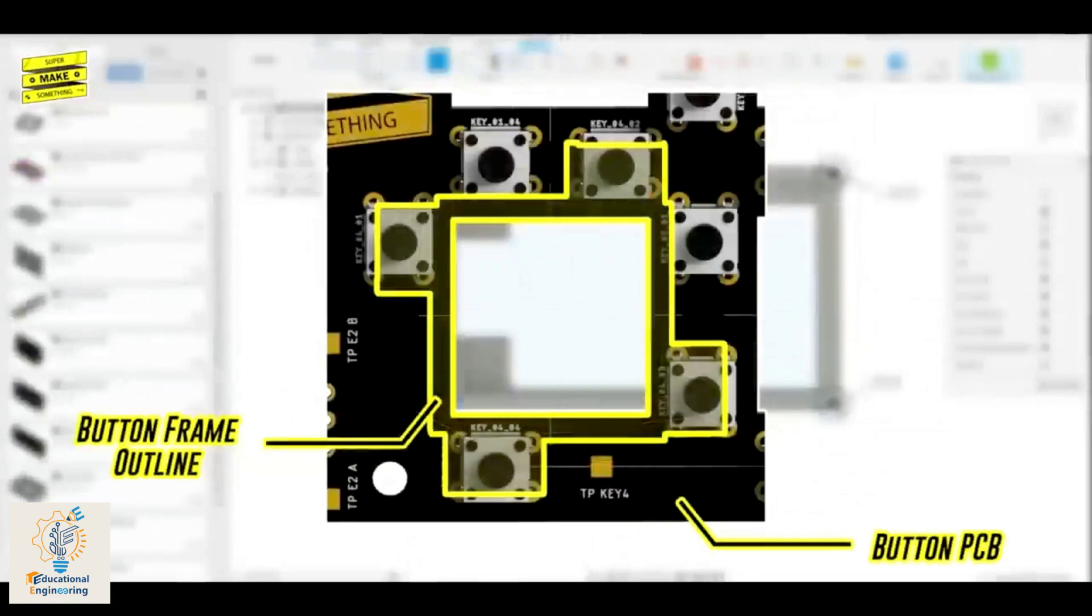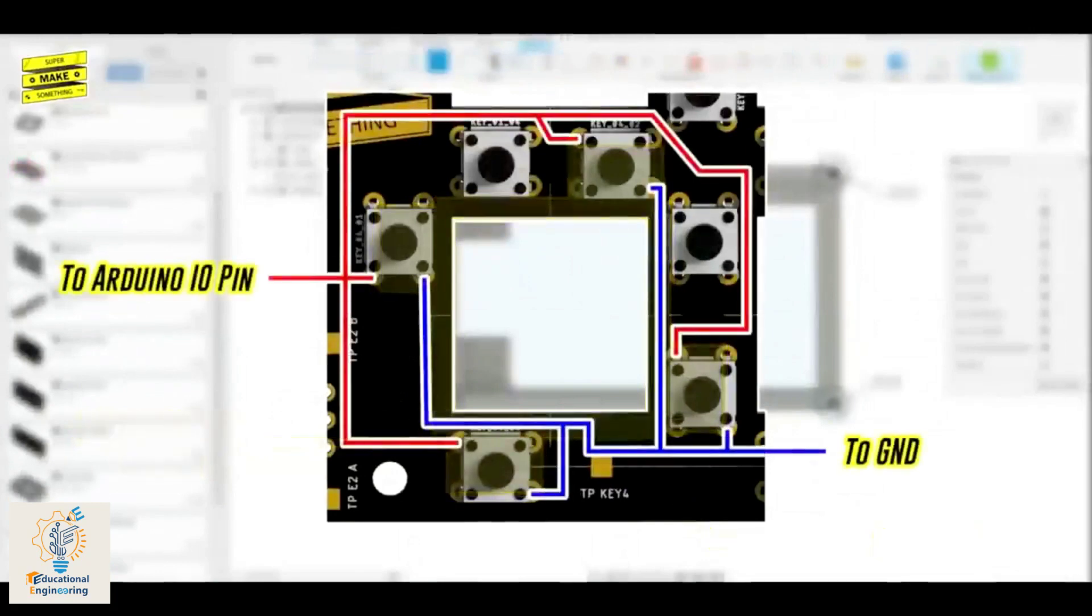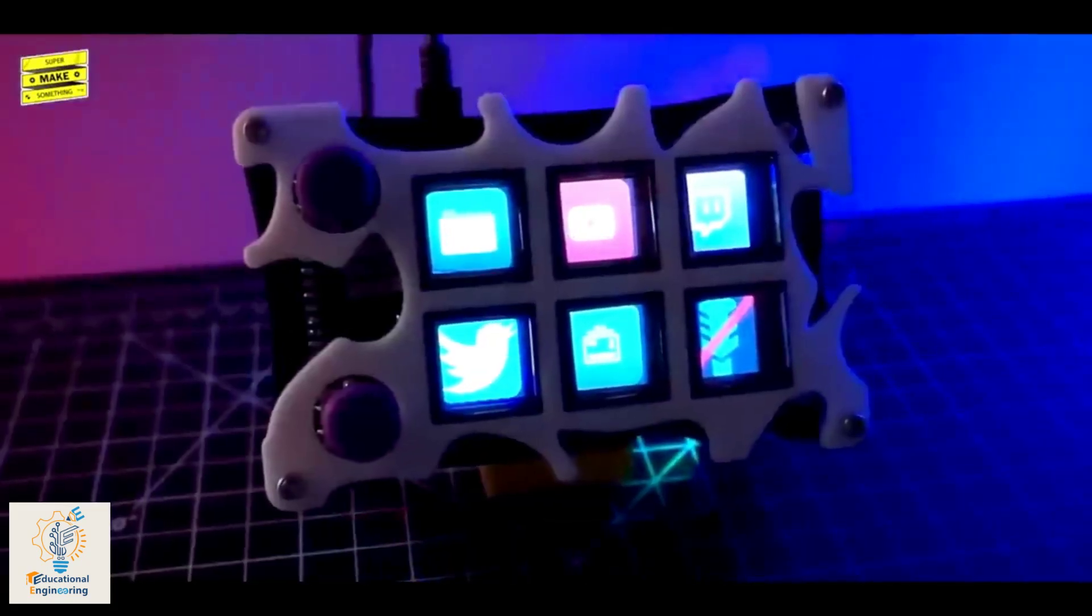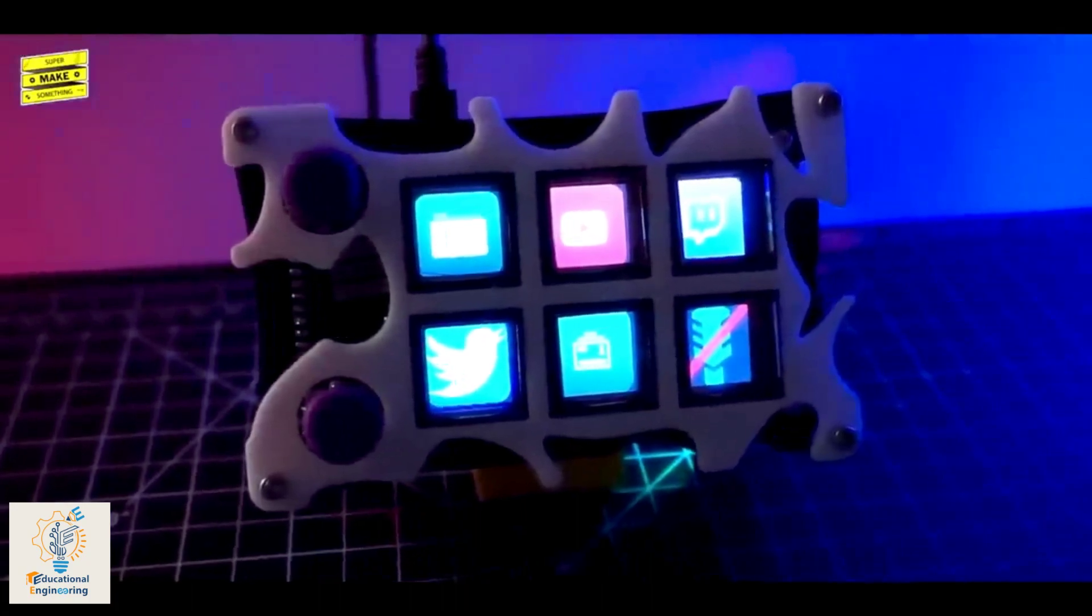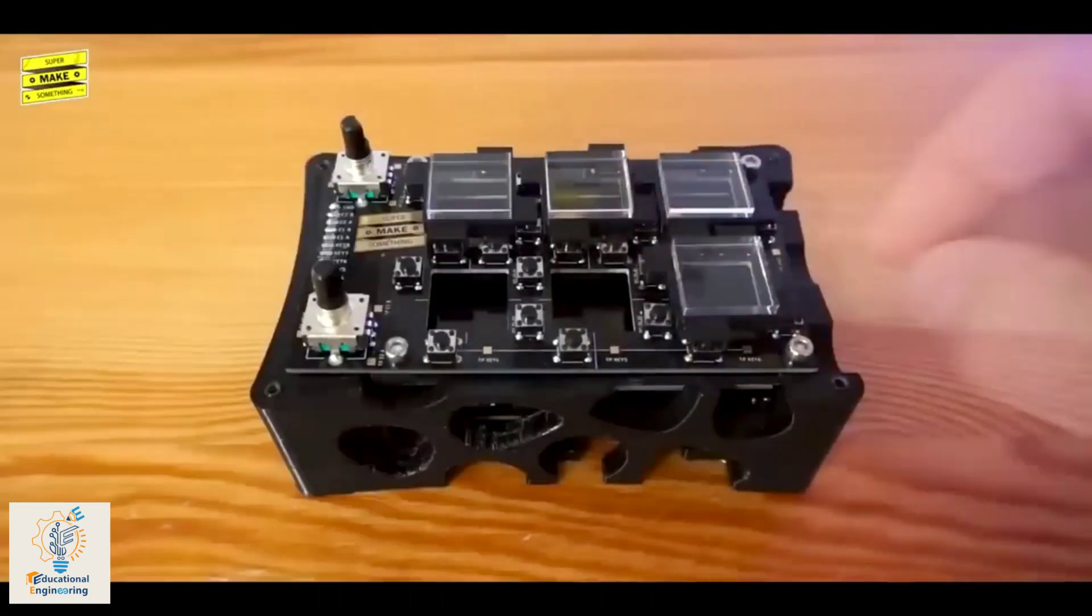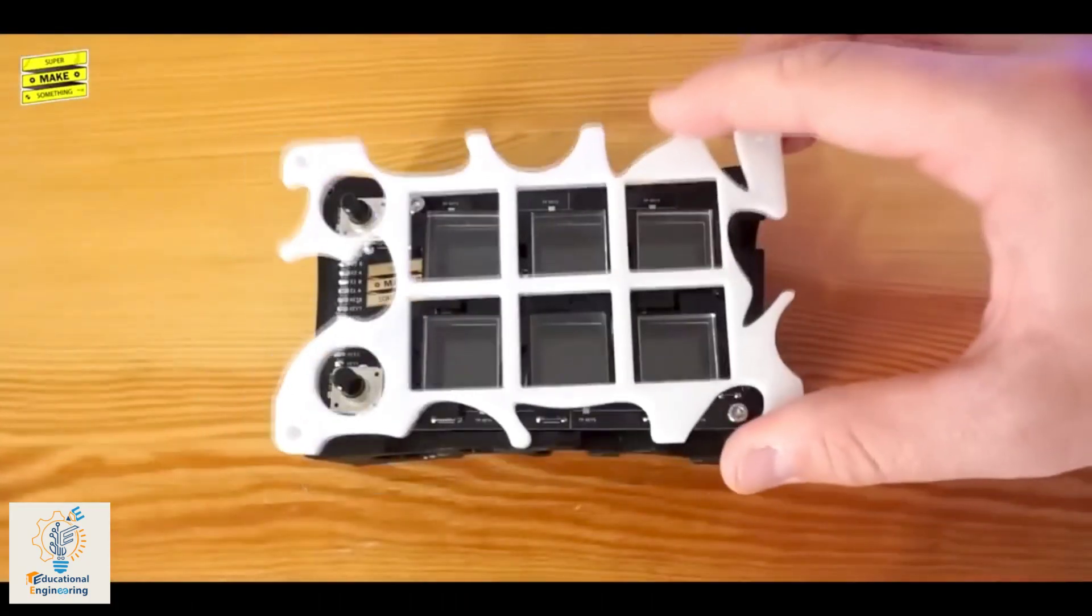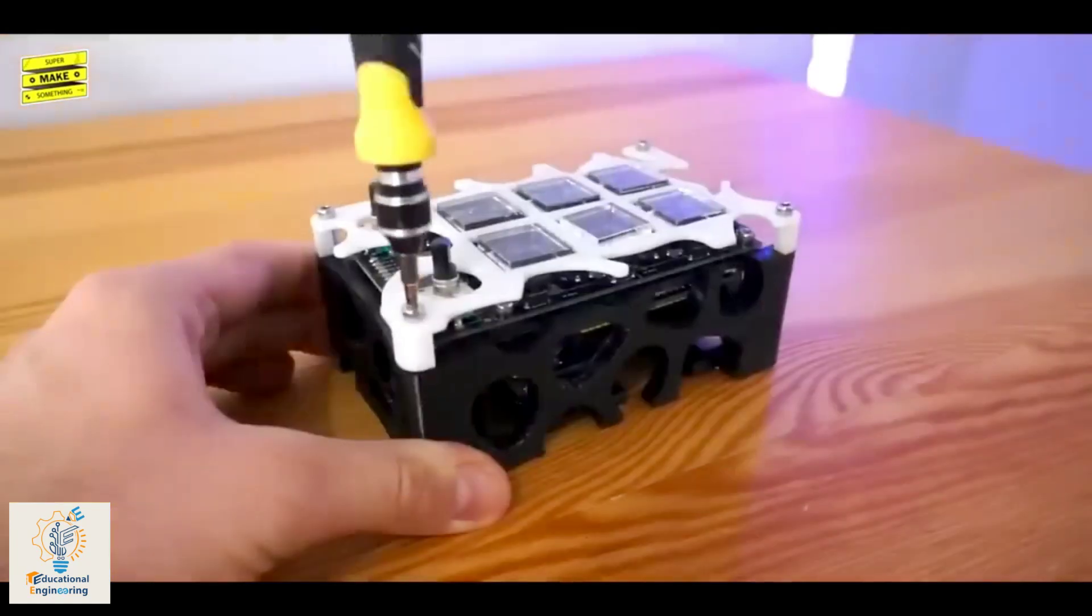This layer consists of six programmable keys and two rotary encoders. Each key has four parallelly connected push buttons, which register the input, irrespective of the key pressing direction. The transparent acrylic buttons are placed over this PCB, which is held in place by the top cover.